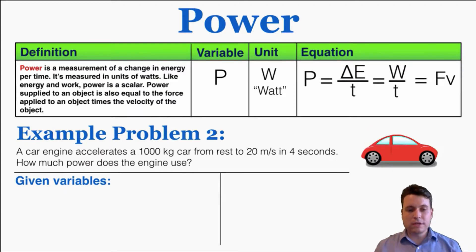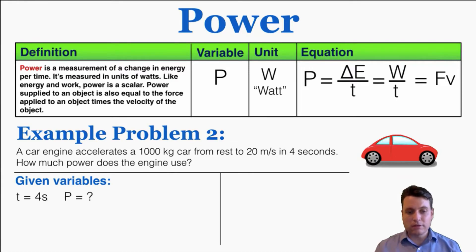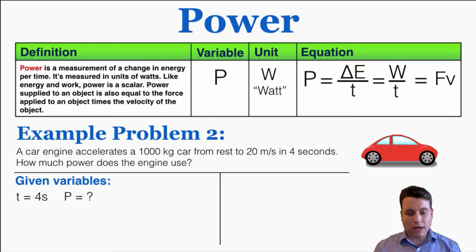Moving on to example problem number two: a car engine accelerates a 1,000 kilogram car from rest to 20 meters per second in four seconds. How much power does the engine use? We're given time right off the bat — that's four seconds — and we're trying to find the power used by the car. But we're not given the change in energy here, so we're going to have to calculate that.